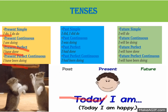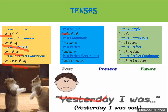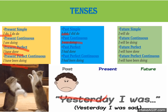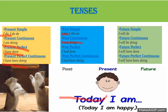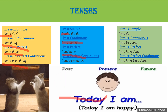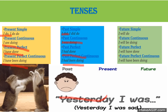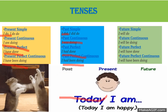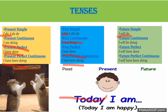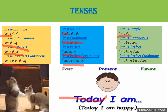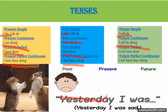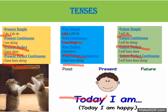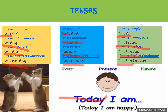Simple past: I did. Past continuous: I was doing. Past perfect: I had done. Past perfect continuous: I had been doing. Future: I will do. Future continuous: I will be doing. Future perfect: I will have done. Future perfect continuous: I will have been doing.